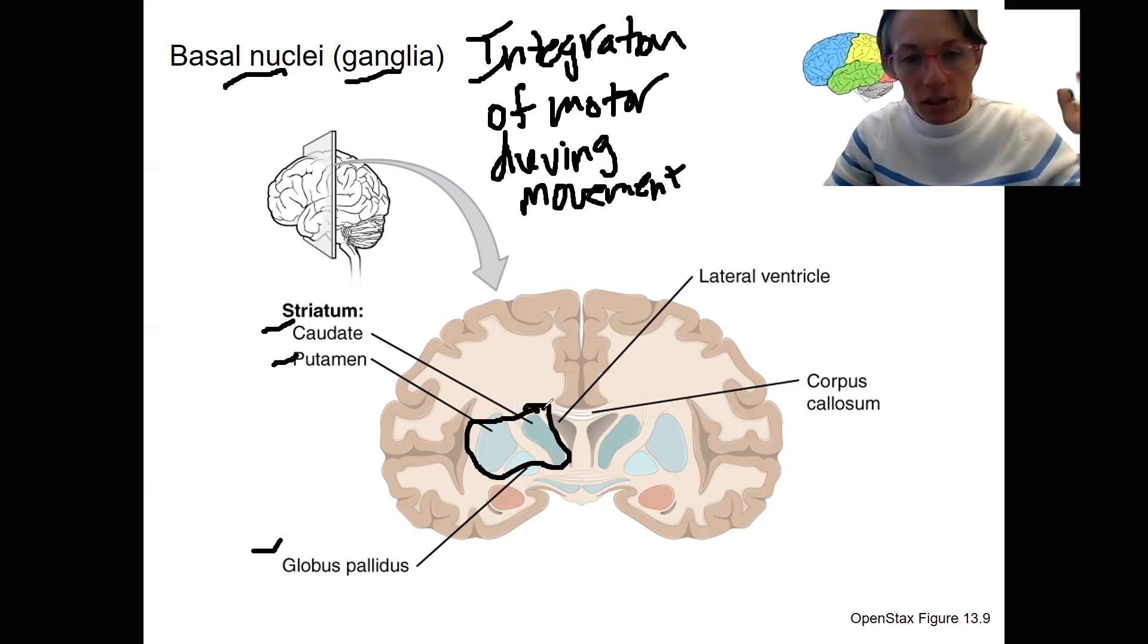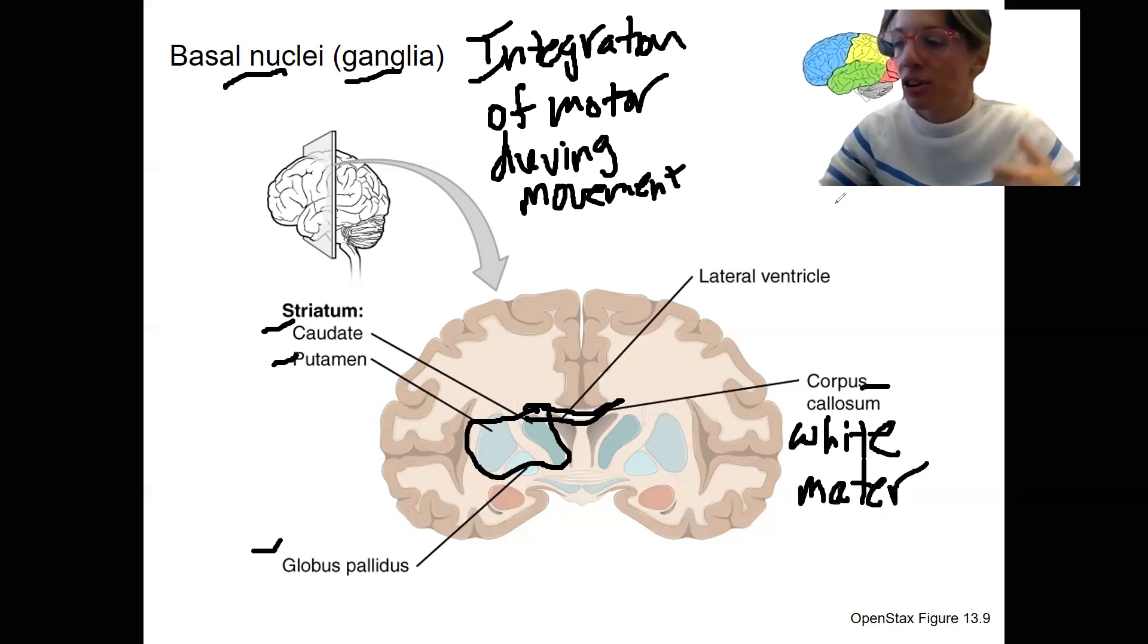So that's basically it for now. Notice here this corpus callosum. I don't think I formally talked about this. This is the white matter tract that connects the two hemispheres. So it allows the two sides of the brain to talk to each other.